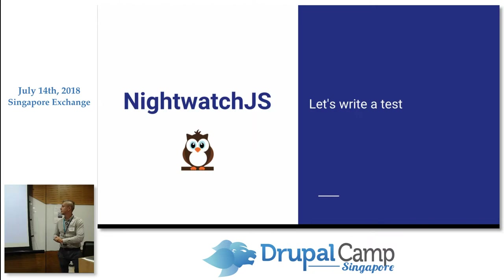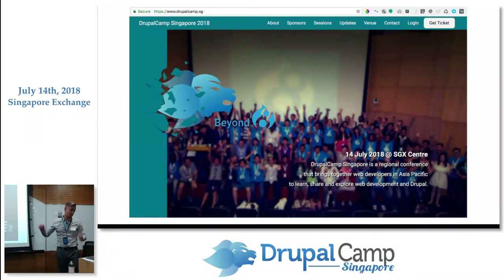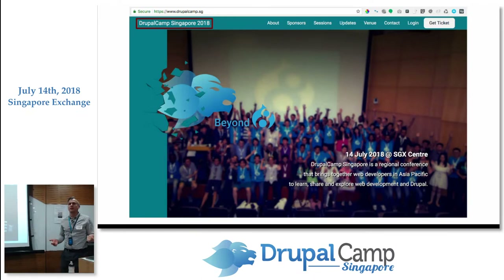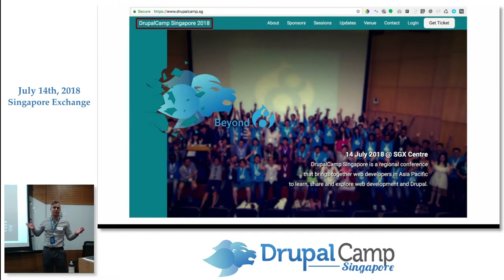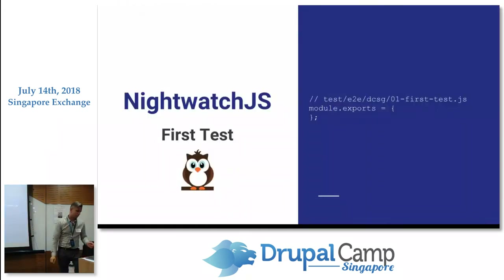Let's try writing a test rather than going into too much theory. Has anyone written a Nightwatch test before? We're going to do that now. I was thinking what to test — I already have a Drupal Camp Singapore site. The simplest thing we can do is go to the page. Our requirements are: check the title of the conference, Drupal Camp Singapore. Let's go to the page and check if we can load the URL and see the title.